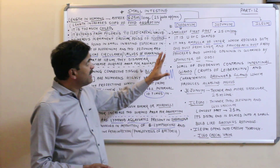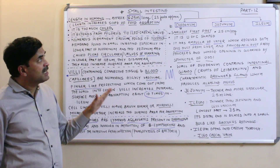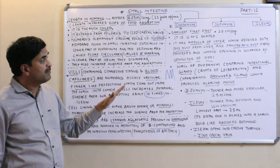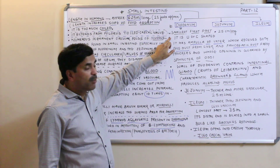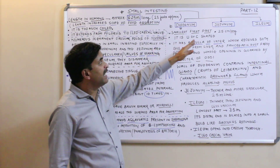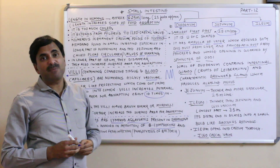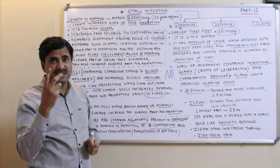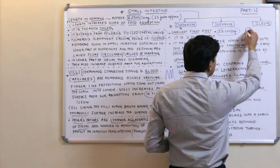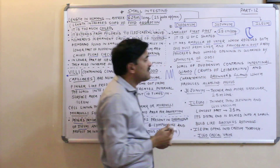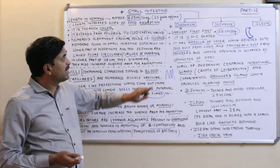The small intestine has three parts: duodenum, jejunum, and ileum. The duodenum is the smallest and first part, only 25 centimeters long. Its shape is C-shaped — in some books it is written as U-shaped, so we can say it is U or C-shaped.